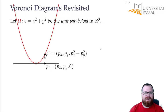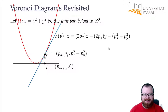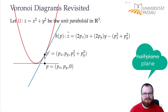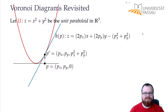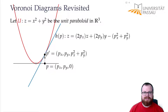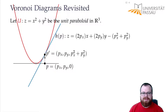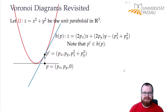Now I want to define a half-plane by this point P, and this will be magic. Our half-plane H(P) is defined as follows: z equals 2 times the x coordinate of P times x, plus 2 times the y coordinate of P times y, minus Px squared plus Py squared. If we plug in the coordinates of P prime, we get 2Px squared plus 2Py squared, and then subtracting Px squared plus Py squared, we get exactly the z coordinate of P prime. That means P prime lies on this half-plane.